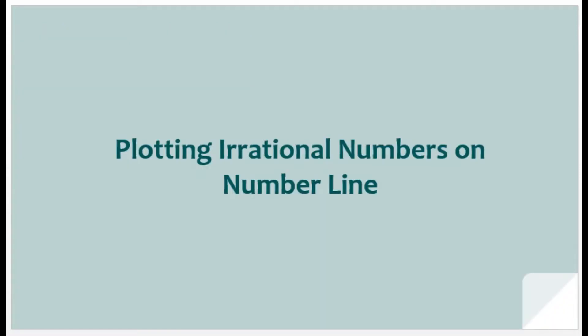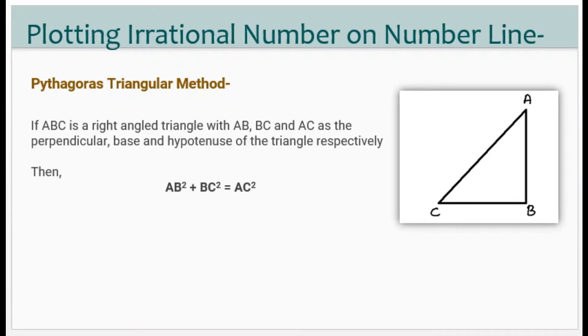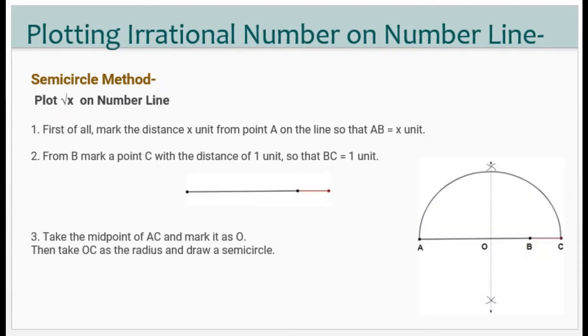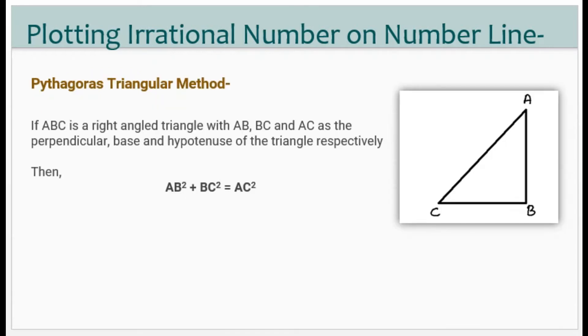Now let us start how to plot an irrational number on a number line. There are two methods: the first method is the Pythagoras triangular method, and the next method is the semicircle method. We will discuss both methods.